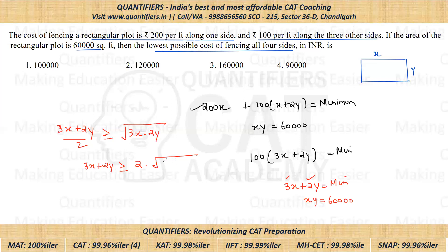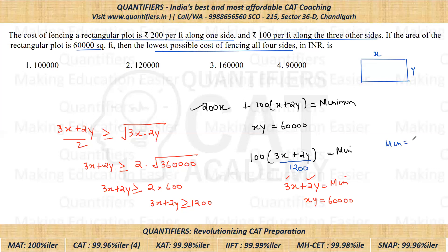Now, 6 times XY means 6 times the area, which is 6 times 60,000 — that equals 3,60,000. So we get 3X plus 2Y is greater than or equal to 2 times 600, which gives us 3X plus 2Y greater than or equal to 1200. Putting 1200 back, the minimum value comes out to be 1200 times 100, which is 1,20,000. So 1,20,000 — option two — is the correct answer. I hope this is clear to everyone. Thank you everyone.